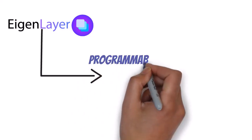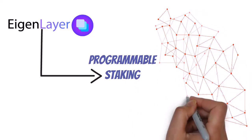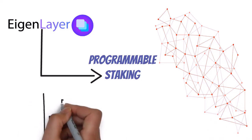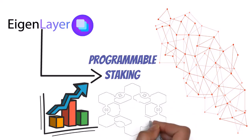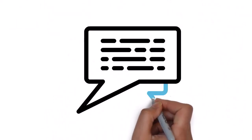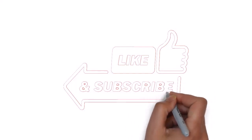In short, EigenLayer presents a unique approach by leveraging Ethereum validators to provide security across multiple networks through programmable staking, creating a more interconnected and resilient ecosystem. EigenLayer's success will depend on its ability to address these challenges, expand its service offerings, and enhance communication with its community. If it can overcome these hurdles, it has the potential to significantly impact the blockchain space. Thank you for watching — if you have questions about EigenLayer, let us know in the comments, and subscribe for more videos.